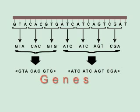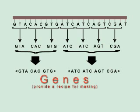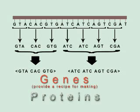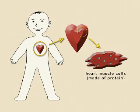These sentences are called genes. They are written in a special genetic language the body can read and understand. They provide a recipe for making molecules called proteins. These proteins can be used to build specialized cells that go to make up the different parts of the body.